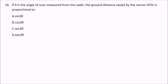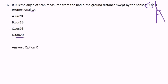If theta is the angle of scan measured from the nadir — nadir being the point directly below the satellite, while zenith is straight up — the ground distance covered by the sensor's IFOV (instantaneous field of view) is proportional to what? The options are square, sine-squared theta, cosine-squared theta, sec-squared theta, or tan-squared theta. The answer is sec-squared theta.